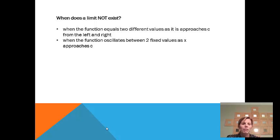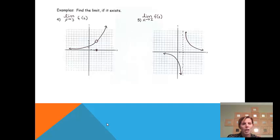And then the other place is if a function oscillates between two fixed values as x approaches c, maybe it just keeps wobbling up and down, then the limit would not exist. So let's just look at a few examples to find limits that do not exist. If you look at example four, it says to find the limit if it exists. The first thing that we want to do, we'll notice that we're going to be approaching three in this case, and there is already a graph.